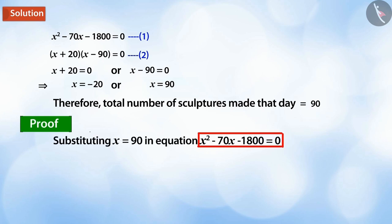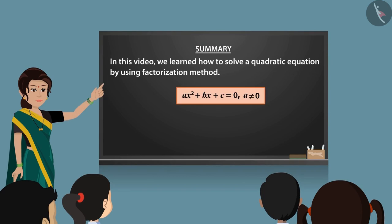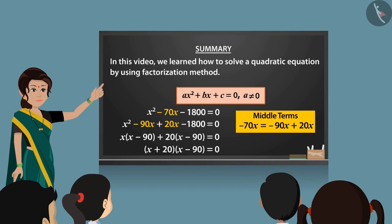On substituting x = 90 in equation 1, we get it equal to zero, which proves that our answer x = 90 is correct. In this video, we learned how to solve a quadratic equation using the factorization method.